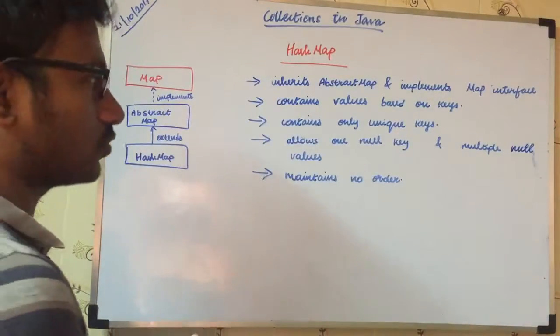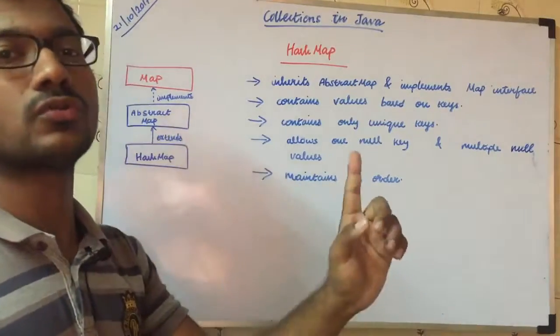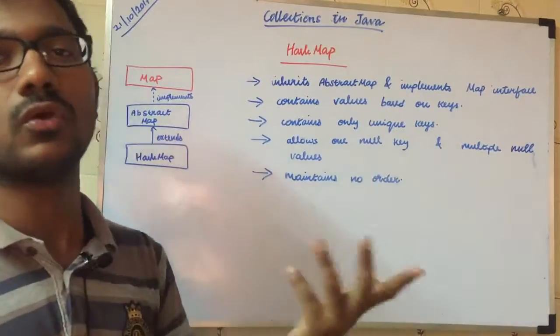One key is null. Maximum one key is null. But values are null.